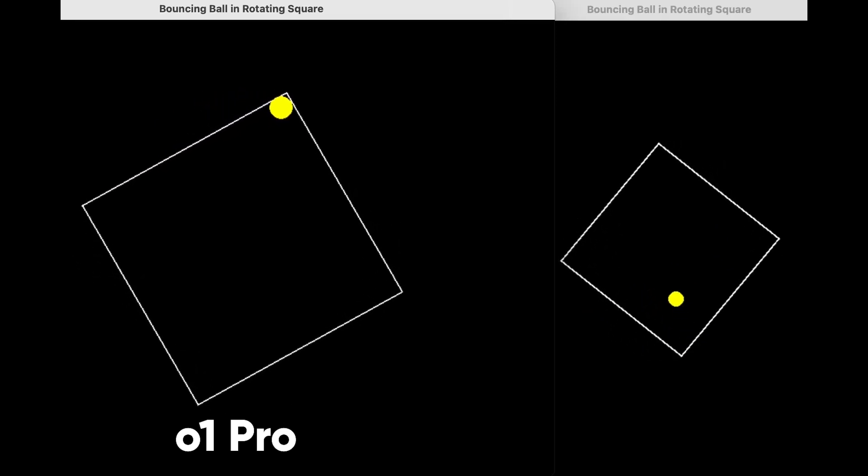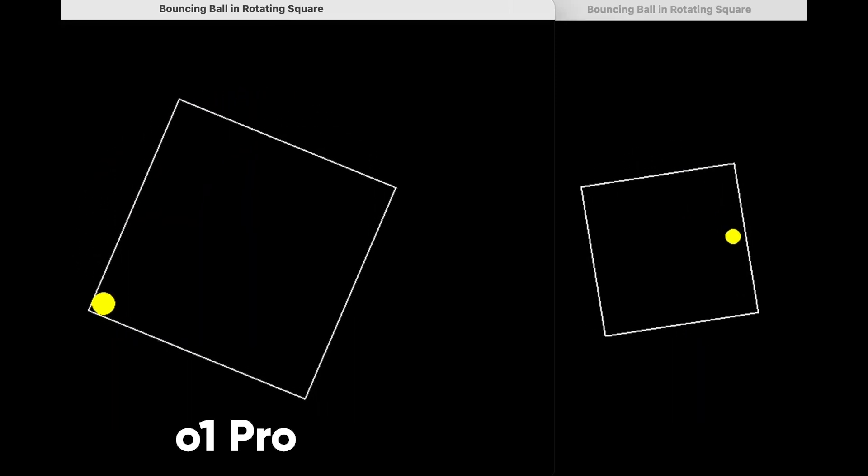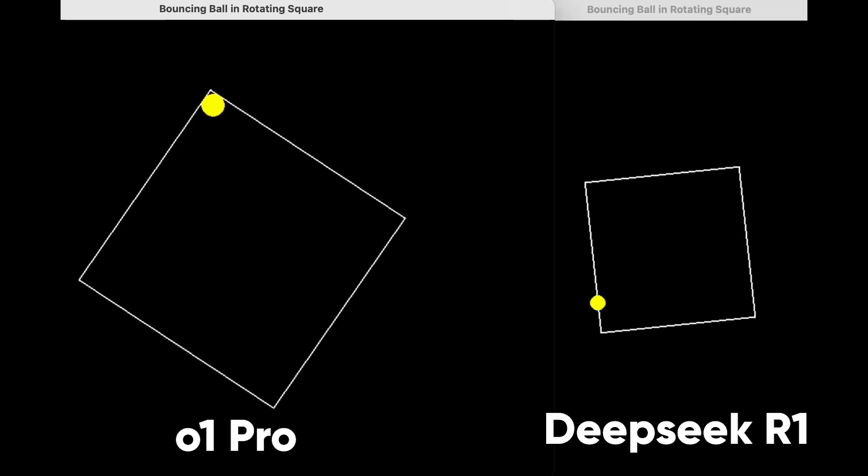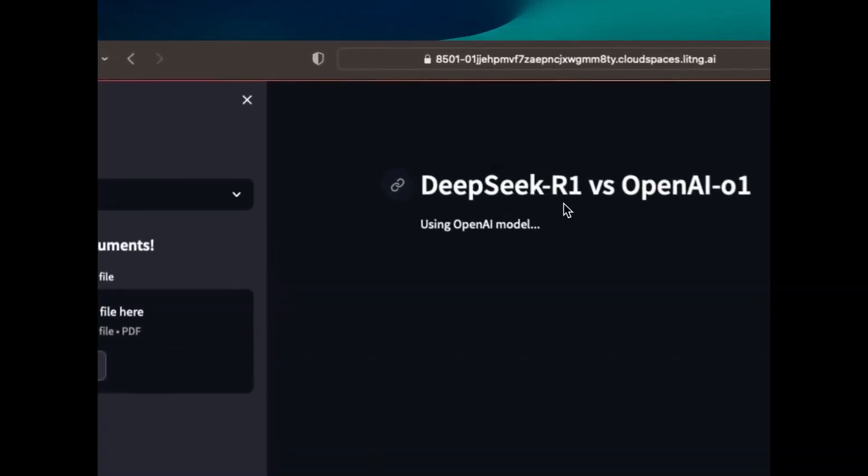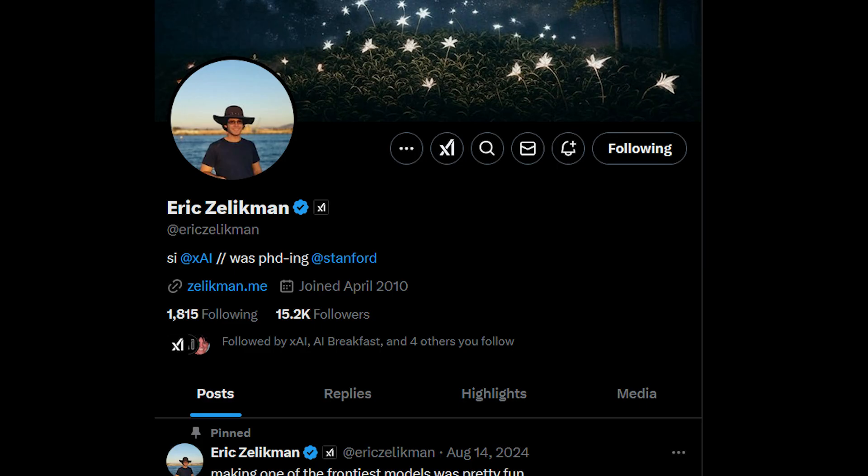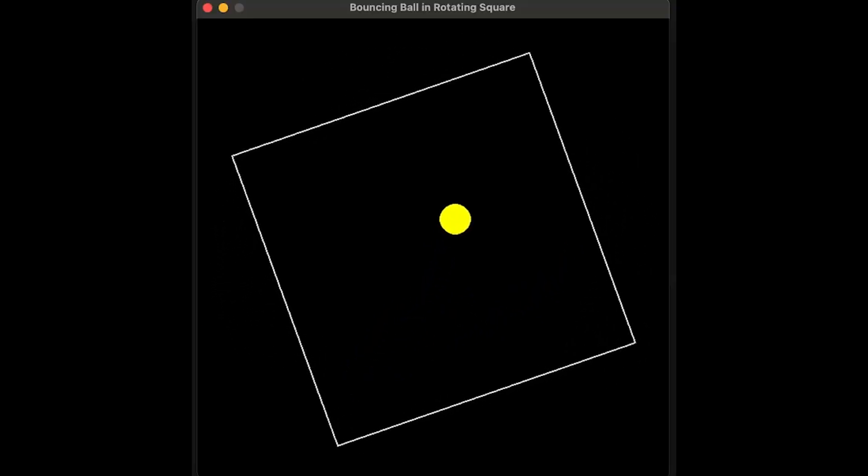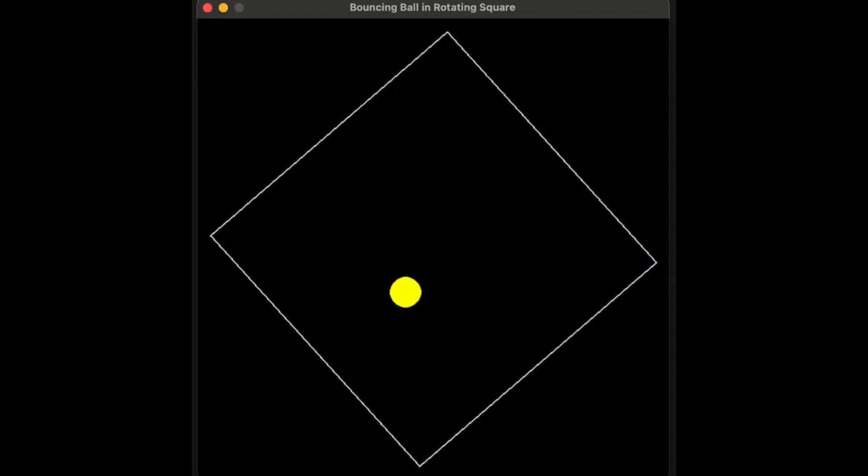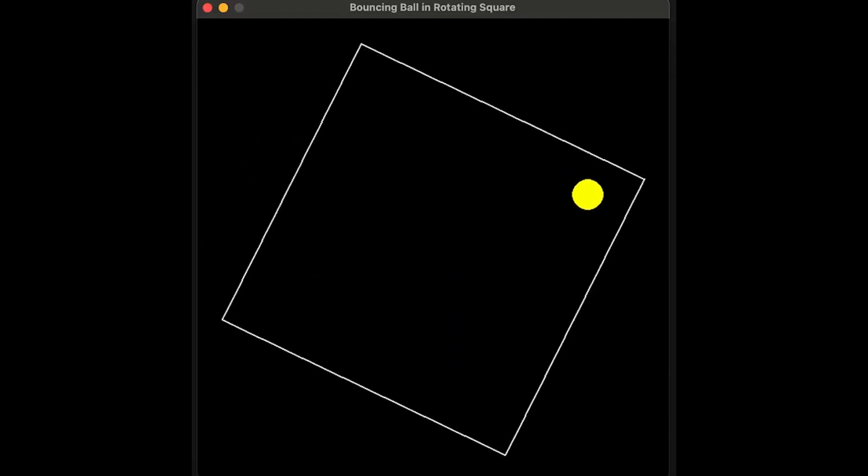It is a hard task and basically both O1 and R1 failed. As you see, O1 Pro on the left, the ball is stuck in one corner. And DeepSeek R1 on the right, the ball clearly moves out of bounds. People were still debating which one is better, until out of nowhere, Eric Zelikman dropped this, no explanation. As you see, it is a clean sweep for Grok 3, but he didn't stop there.